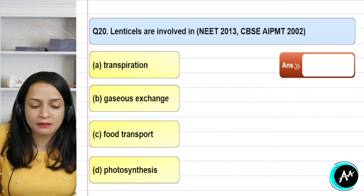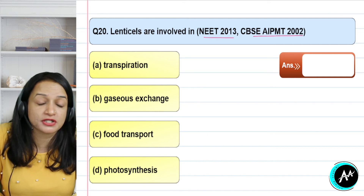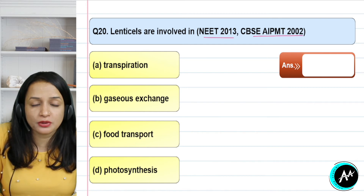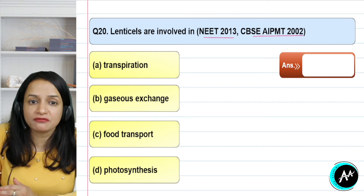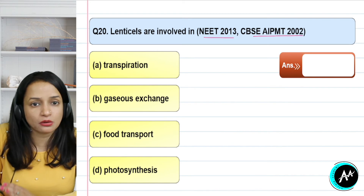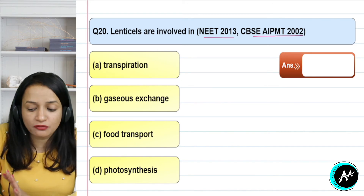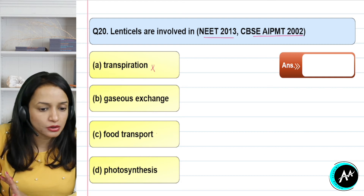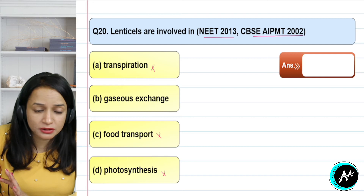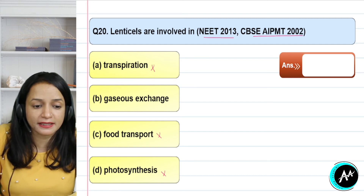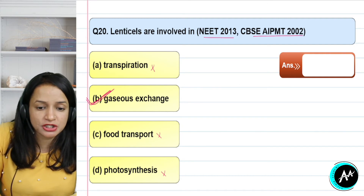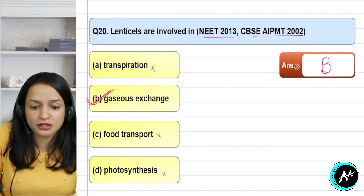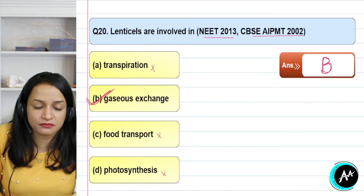Question 20 — repeated in NEET 2013 and CBSE/CIPMT 2002: lenticels are involved in what? Lenticels are just like stomata. Stomata are for gaseous exchange, so lenticels are also for gaseous exchange. Lenticels are not for transpiration, not for water loss, not for food transportation, and not for photosynthesis — that is the leaf's role. Lenticels are basically equal to stomata and function in gaseous exchange. The correct answer for question 20 is option B — gaseous exchange.